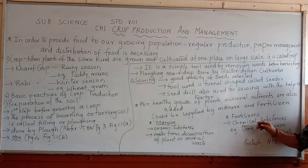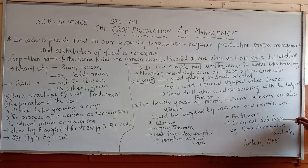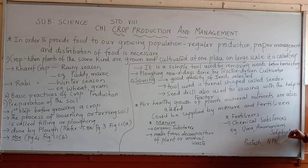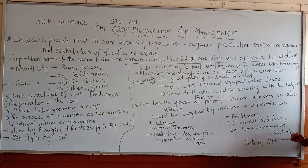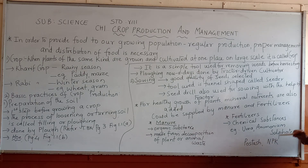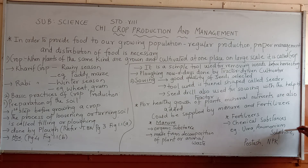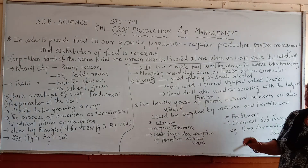What are fertilizers? They are chemical substances. For example, urea and aluminum sulfate. What is NPK? N stands for nitrogen, P stands for phosphorus, and K stands for potassium. Is it clear?